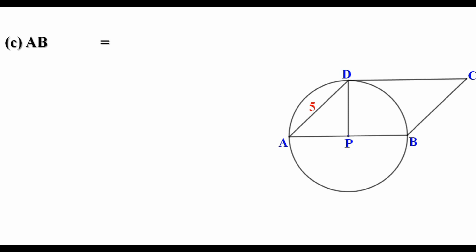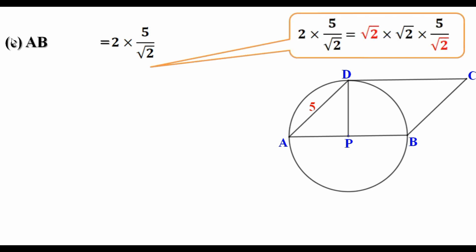Now we have to find the area of the parallelogram ABCD. Let us first find the side AB, which is the diameter of the circle. We know diameter is 2 times radius. So AB equal to 2 into 5 by root 2. Now 2 can be written as root 2 into root 2. So 2 into 5 by root 2 can be written as root 2 into root 2 into 5 by root 2. One root 2 gets cancelled and we get 5 root 2. That is the length of AB is 5 root 2 centimeters.